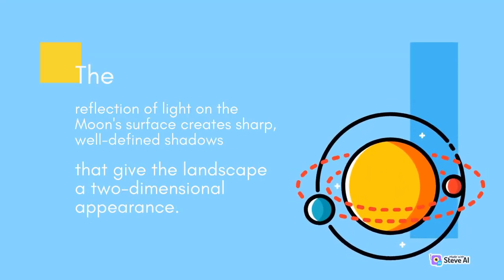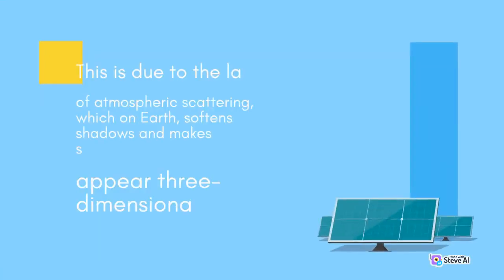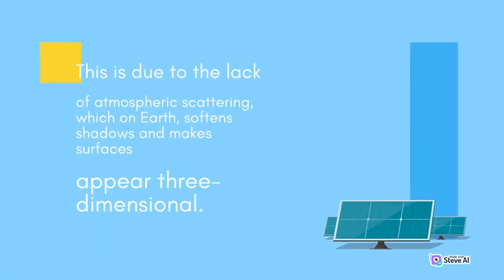The reflection of light on the Moon's surface creates sharp, well-defined shadows that give the landscape a two-dimensional appearance. This is due to the lack of atmospheric scattering, which on Earth softens shadows and makes surfaces appear three-dimensional.